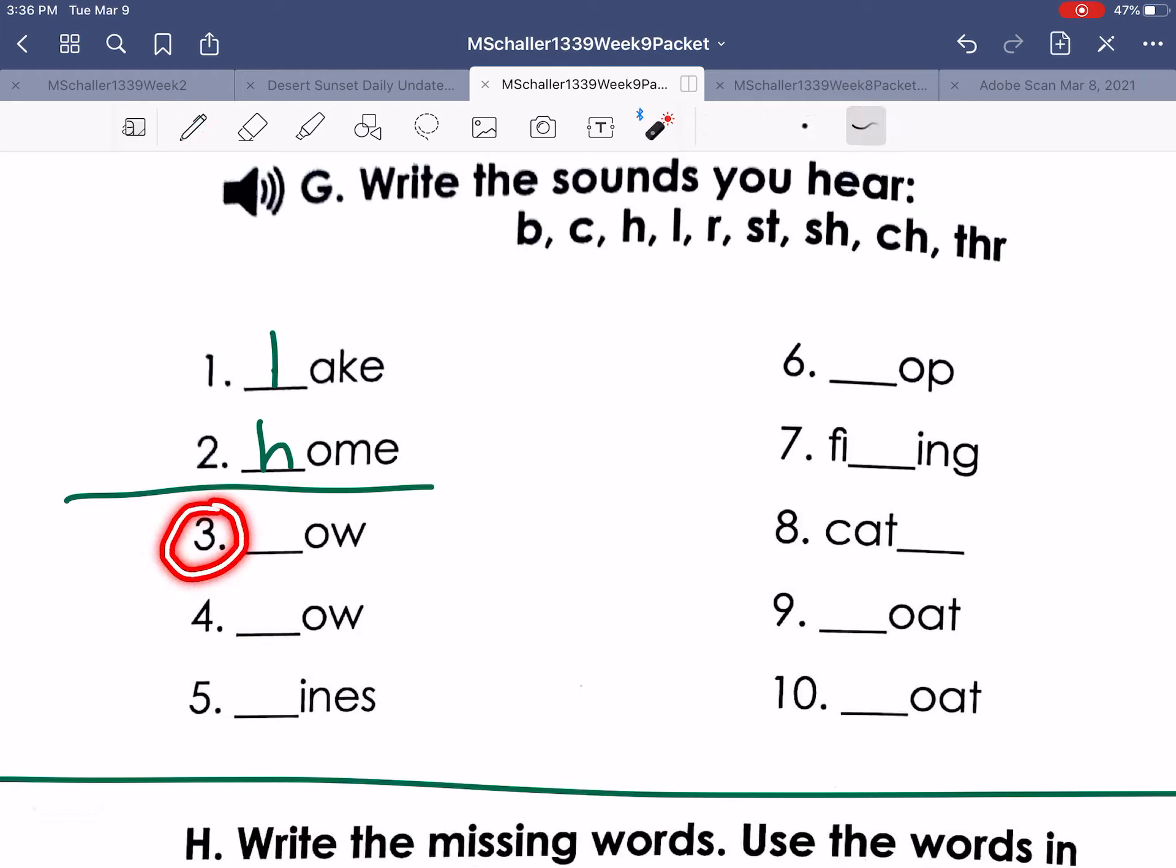Number three, throw. Throw. Number three, throw. Number four, row. Row. Number four, row. Number five, lines. Lines. Number five, lines.